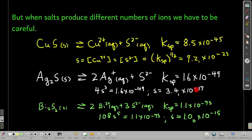And that's a bigger number than the previous one. So comparing these two, even though silver sulfide has a smaller KSP than copper 2 sulfide, it actually has a greater solubility. More moles per liter will dissolve.